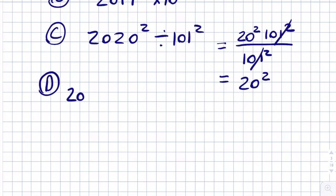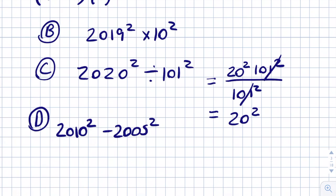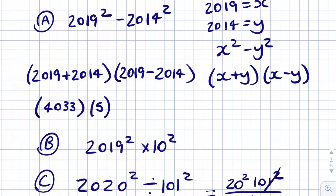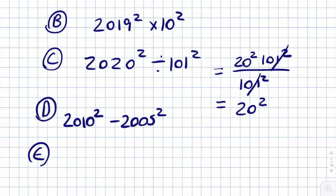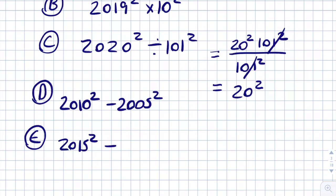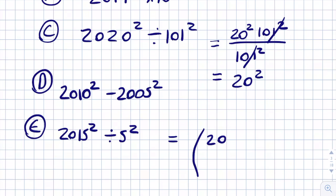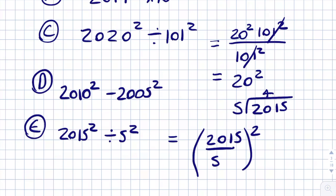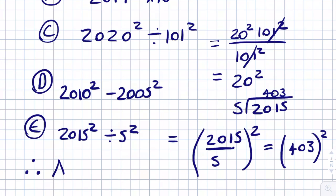Answer D is 2010 squared minus 2005 squared. Both 2010 and 2005 are multiples of 5, so D is not our answer. The only answer left is E: 2015 squared divided by 5 squared. Rewriting as a fraction and taking the square out, we do 2015 divided by 5. 5 goes into 20 four times, into 1 zero times, into 15 three times, giving 403 squared. Since 403 doesn't end in 0 or 5, it is not a multiple of 5. Therefore our final answer is E.